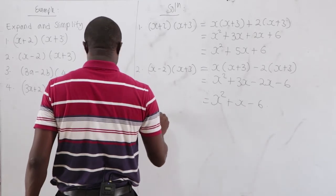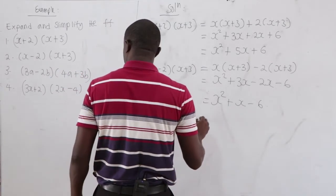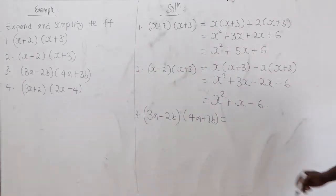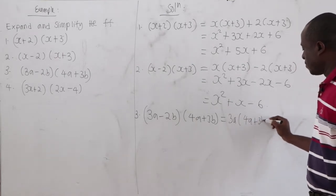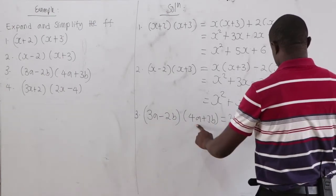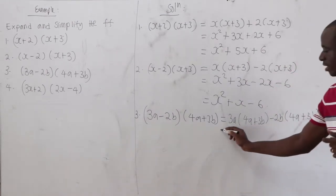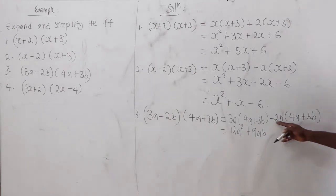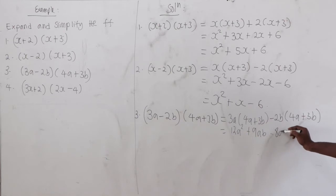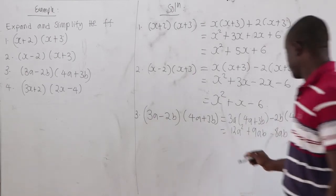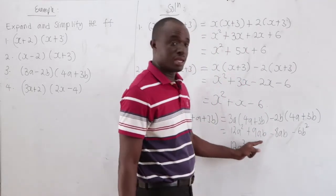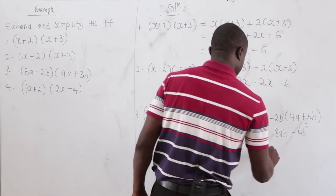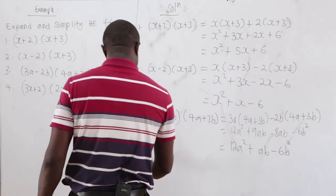Third: 3a minus 2b times 4a plus 3b. Pick 3a: 3a times 4a equals 12a squared, 3a times 3b equals 9ab. Pick negative 2b: negative 2b times 4a equals negative 8ab, negative 2b times 3b equals negative 6b squared. Grouping: 12a squared, 9ab minus 8ab equals ab, minus 6b squared.